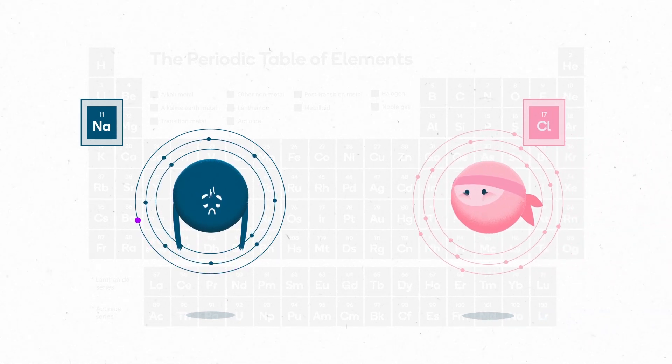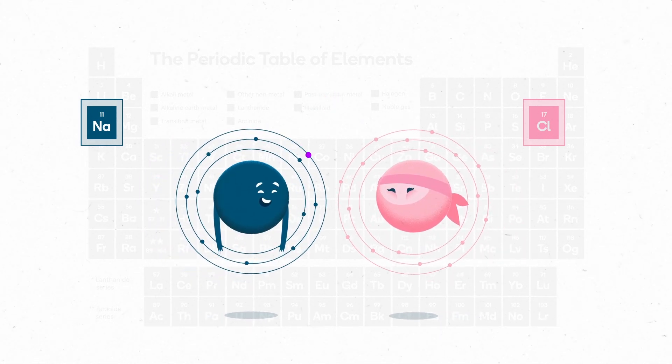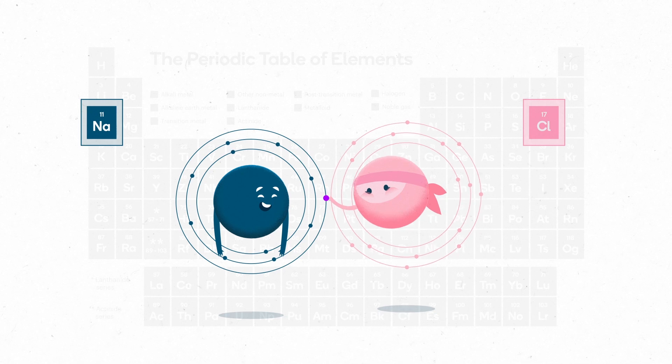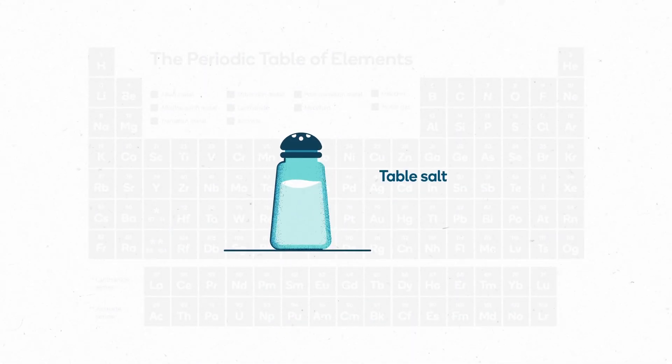Atoms react and form bonds by either sharing or transferring valence electrons. For example, sodium can transfer its electron to a chlorine atom, and they can react to form a happy couple, table salt.